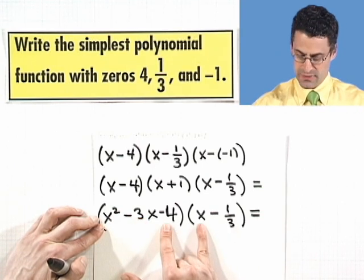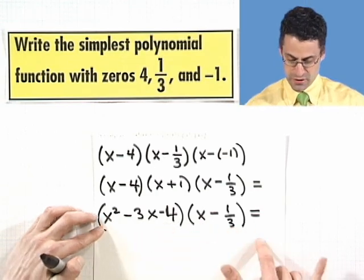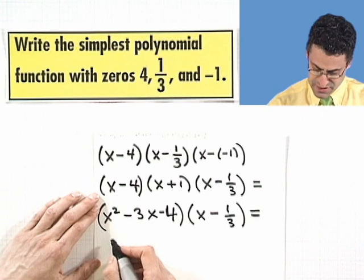Then I see this term, negative 4x. And I see this term, positive 4/3. When you put all that together and combine like terms,